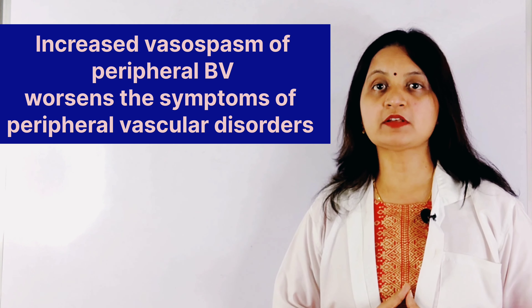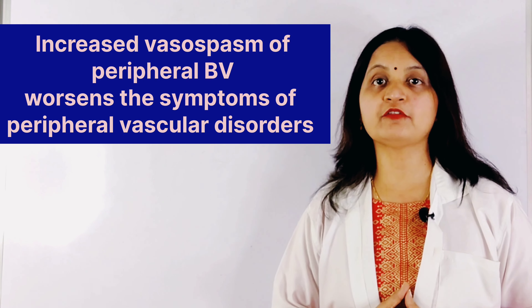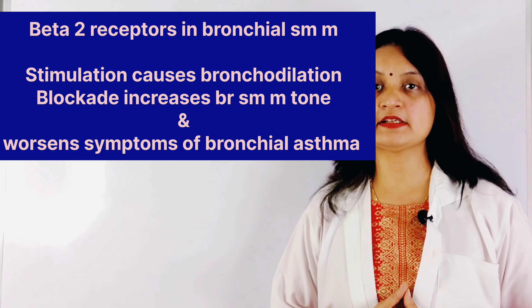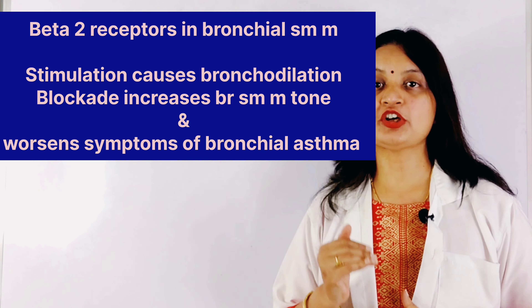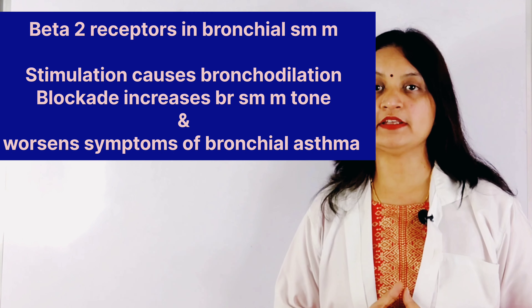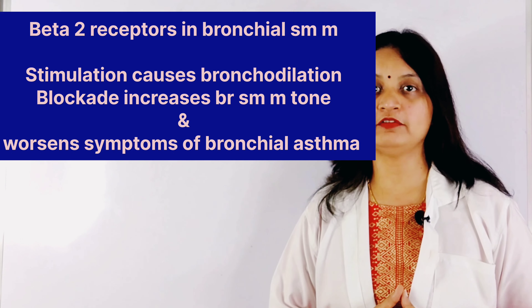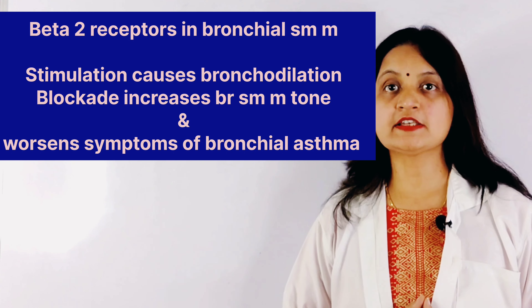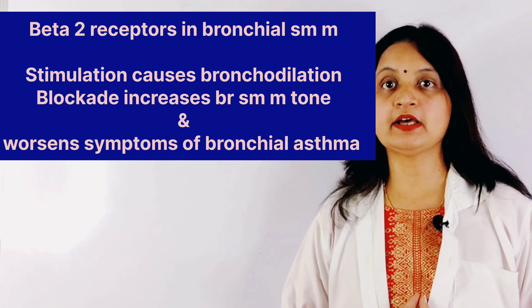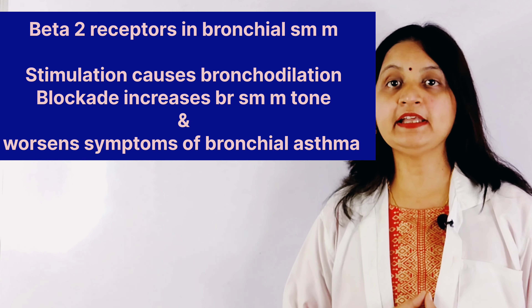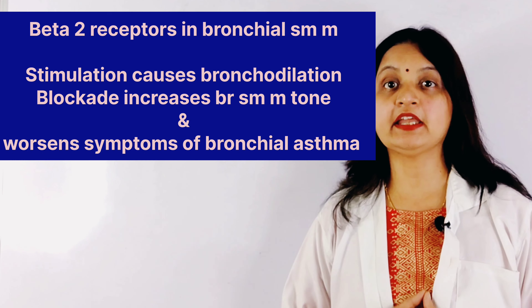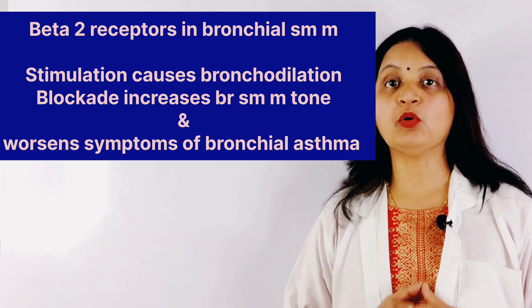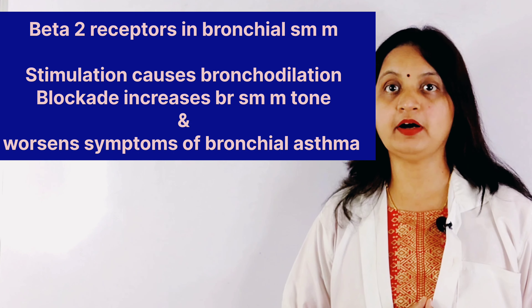Beta 2 receptors are also present in the smooth muscles of the bronchial airways, and stimulation of beta 2 receptors results in relaxation of the airways or bronchodilation. Administration of beta blockers blocks the beta 2 receptors, preventing relaxation and resulting in increased tone of the bronchial airways, which results in worsening of bronchial asthma.